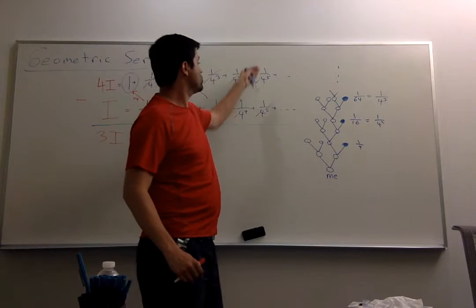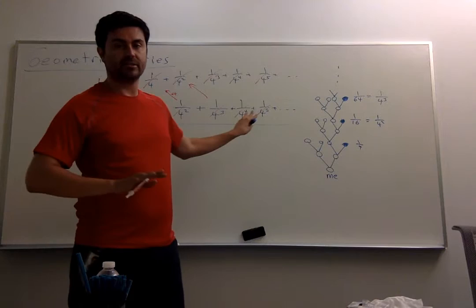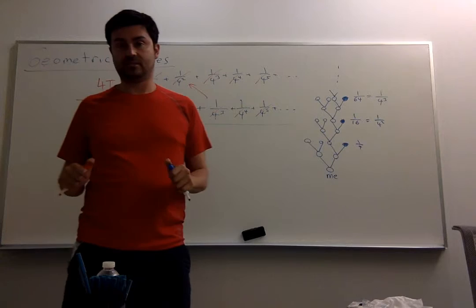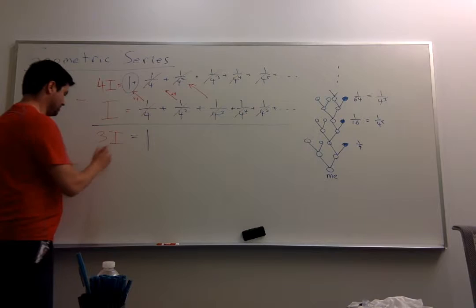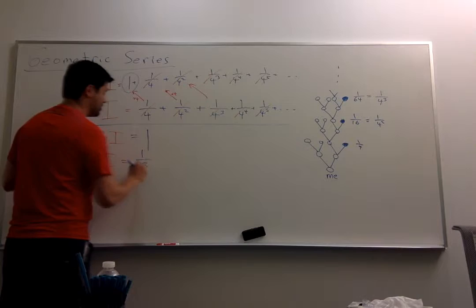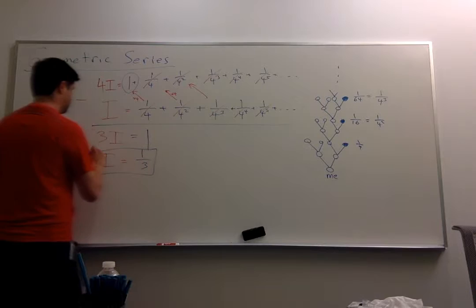Disclaimer. If you like formality, there's some calculus here that needs to be explained. And there's an argument with limits that shows that this is possible. But if you believe me, as you believe me that I was part Irish, this works. And so, 3i is equal to 1, which means i is equal to 1 third, which means I am 1 third Irish, as I told you.